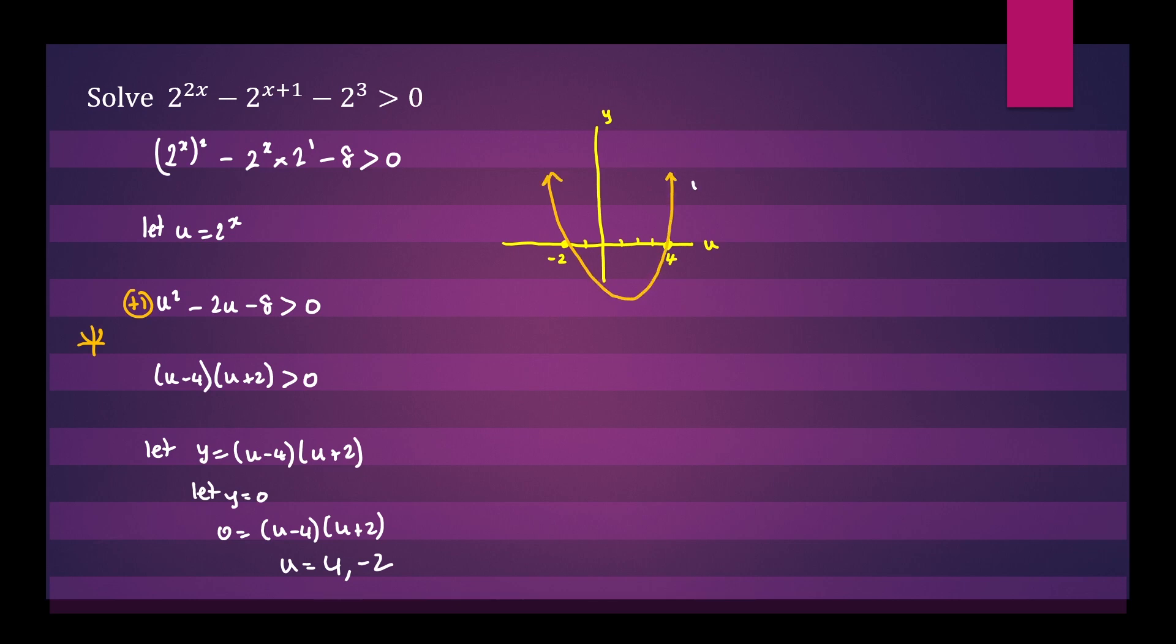So your function y will be greater than 0 when it's above the x-axis, y will equal 0 on the x-axis, and y is less than 0 when it's below the x-axis. So we can see from the graph our two required areas are here and here. This is where our function is positive.